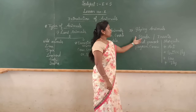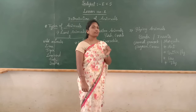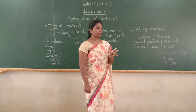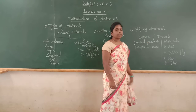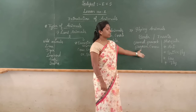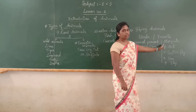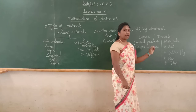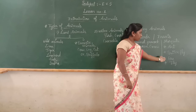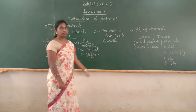Next, flying animals. Some animals fly in the air — those are called flying animals. Flying animals are also divided into two groups: birds and insects. Birds include pigeon, crow, etc. — these animals fly in the air. Insects are small creatures and they have six legs. Insects include mosquito and butterfly. Today we discussed about these points. Thank you.